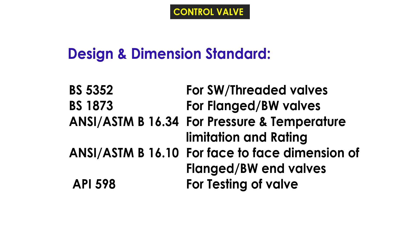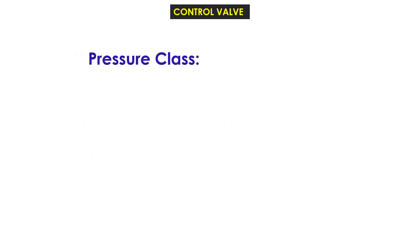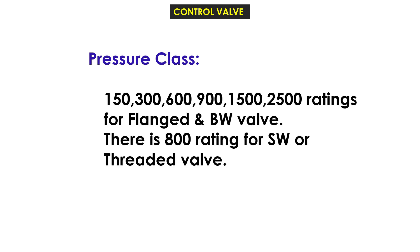ANSI/ASTM B16.10 covers face-to-face dimensions of flanged and butt-weld valves. API 598 covers testing of valves. Pressure classes for control valves are: 150, 300, 600, 900, 1500,